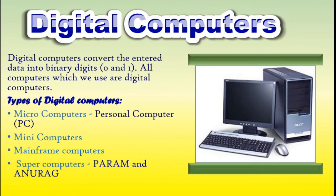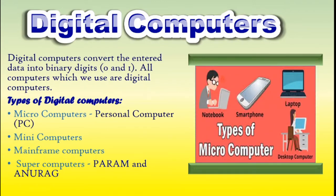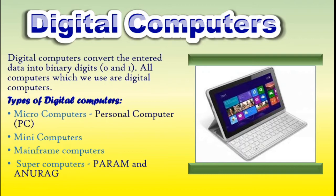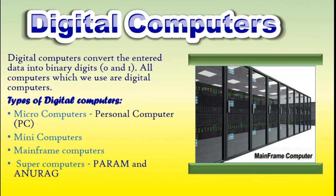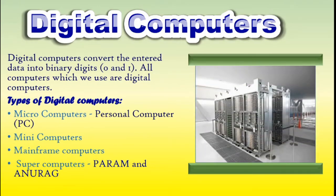Digital computers can store information. We can say that digital computers count and analog computers measure. Digital computers are classified into four types: Microcomputers, which are commonly known as personal computers or PC; Mini computers, which are more powerful than microcomputers; Mainframe computers, which have many processors and can support more than 100 users at a time; and Supercomputers, which are the most powerful among digital computers. Param and Anurag are supercomputers developed by India.